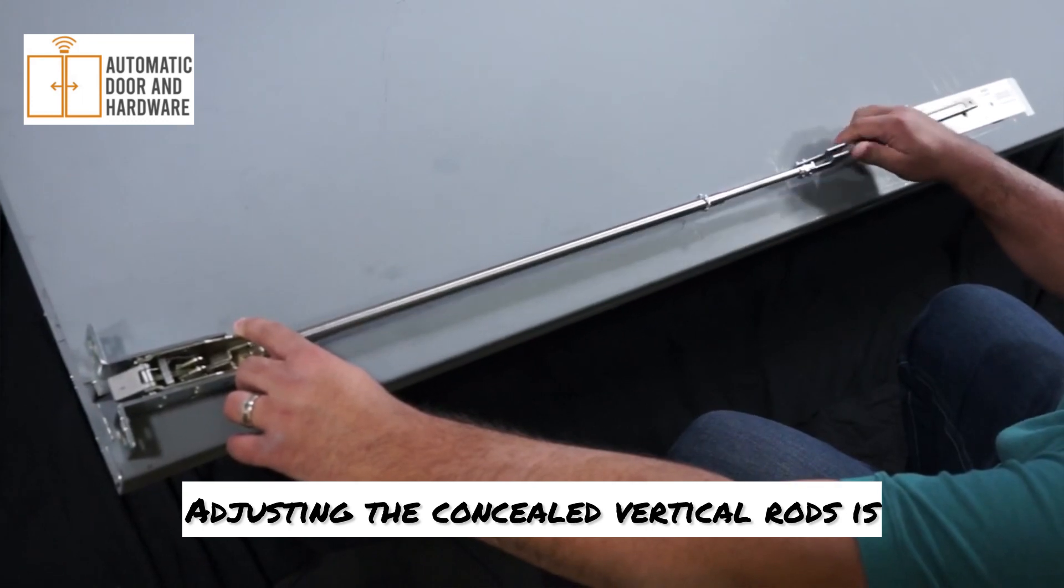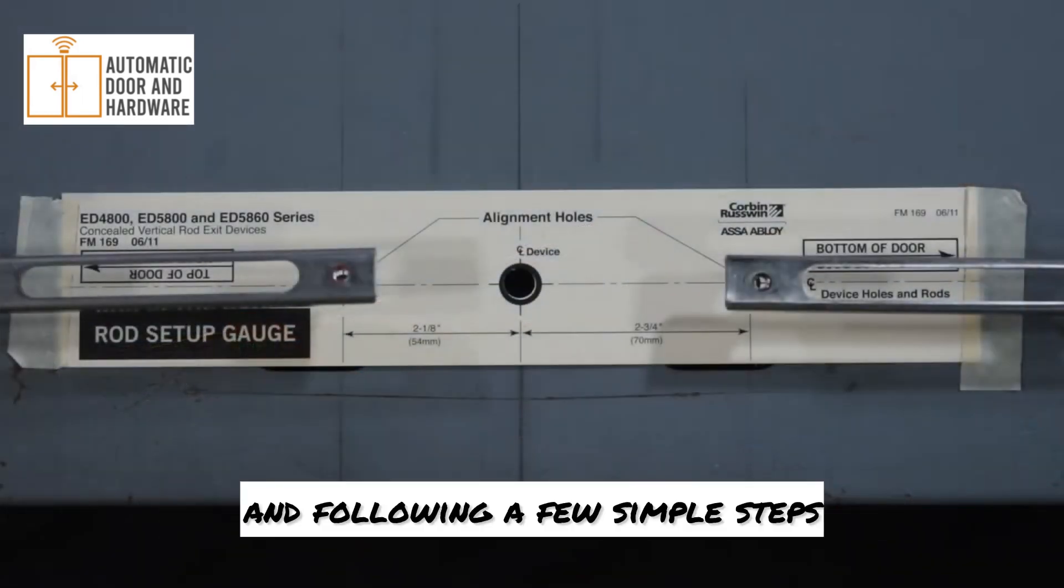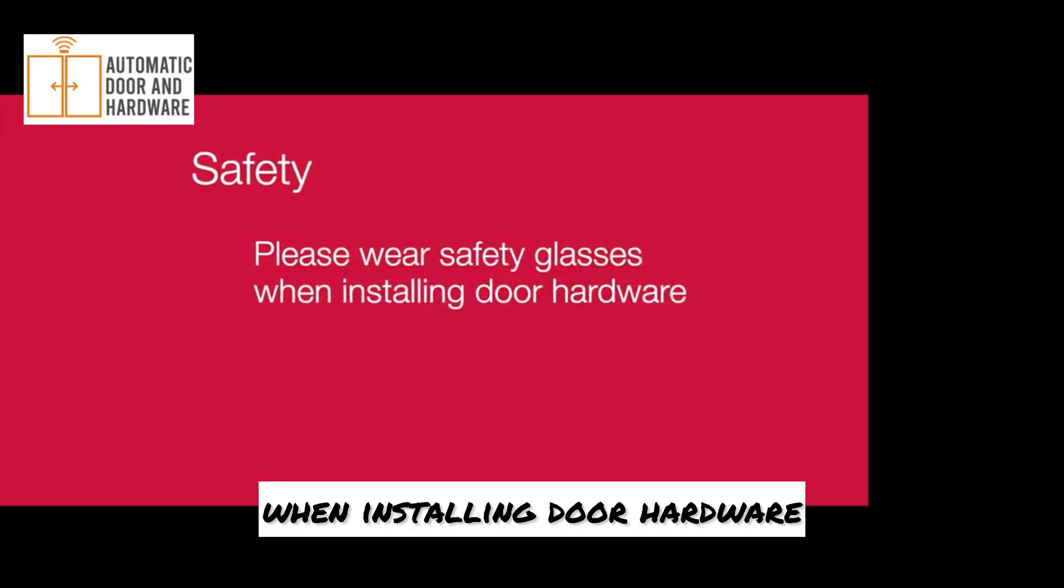Adjusting the concealed vertical rods is accomplished by using the rod setup gauge and following a few simple steps. Please wear safety glasses when installing door hardware.